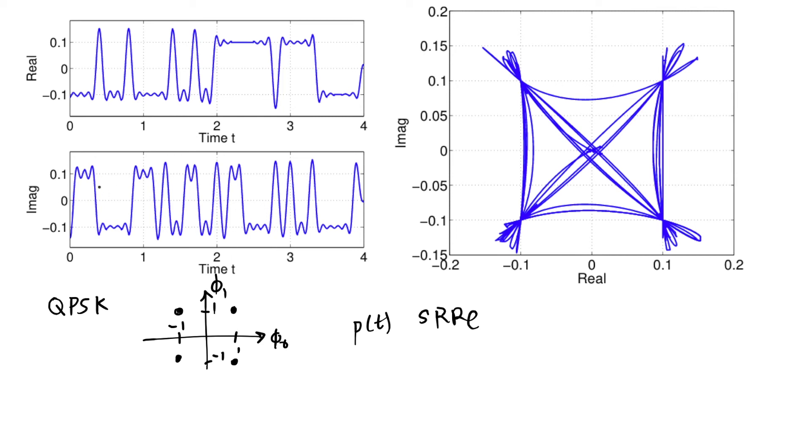You can see that there is some ringing because it's a square root raised cosine pulse shape and not a rectangular shape, but you can see approximately what the symbol period is. It's approximately something like this length is a 1 T sub S, and what I'm doing is generating many bits or many symbols and plotting them over time.